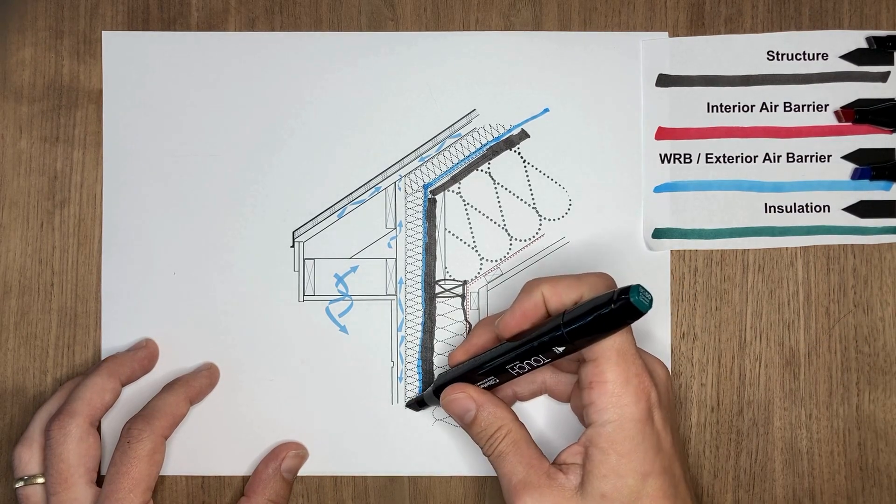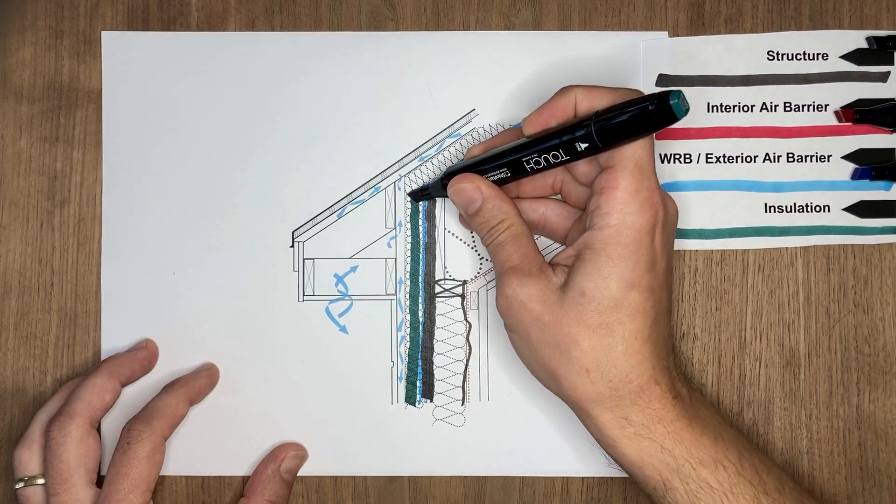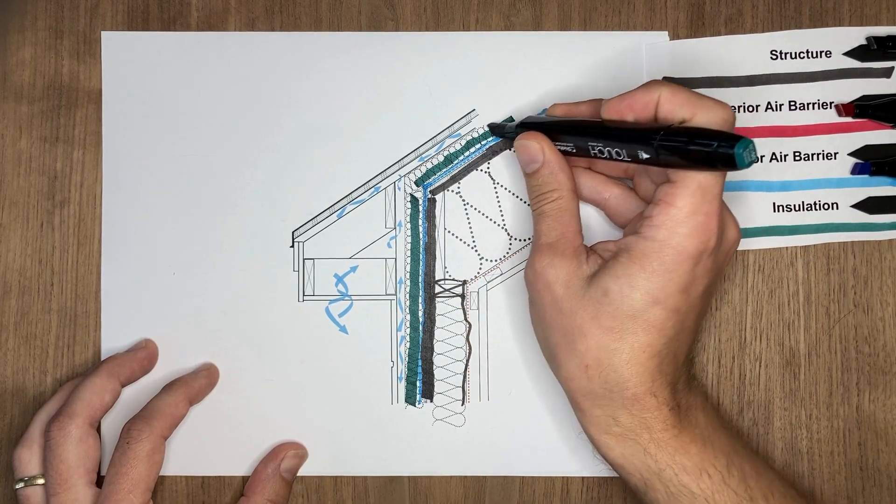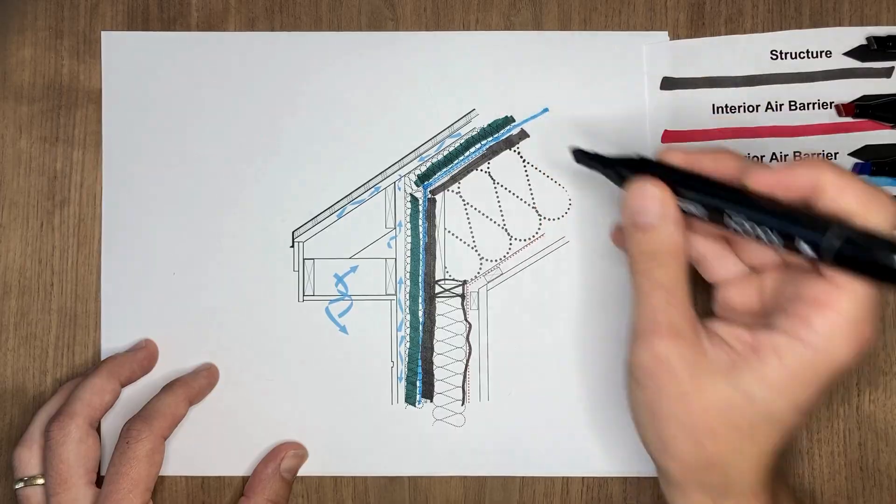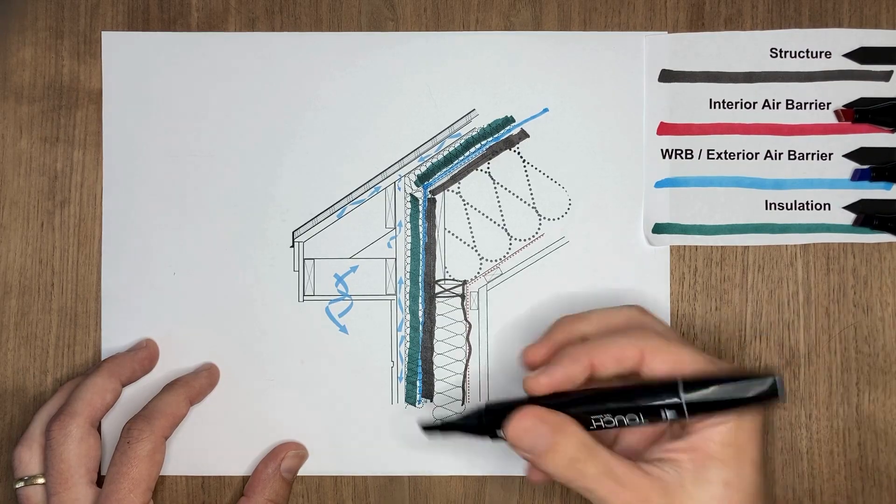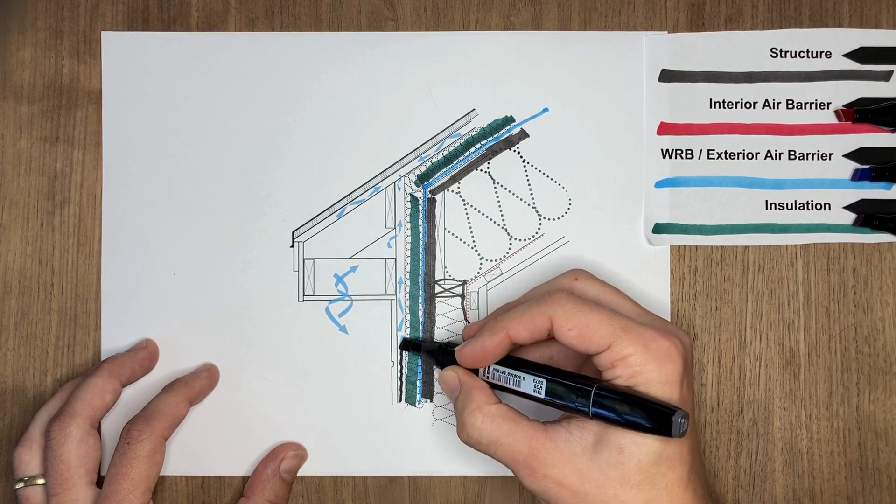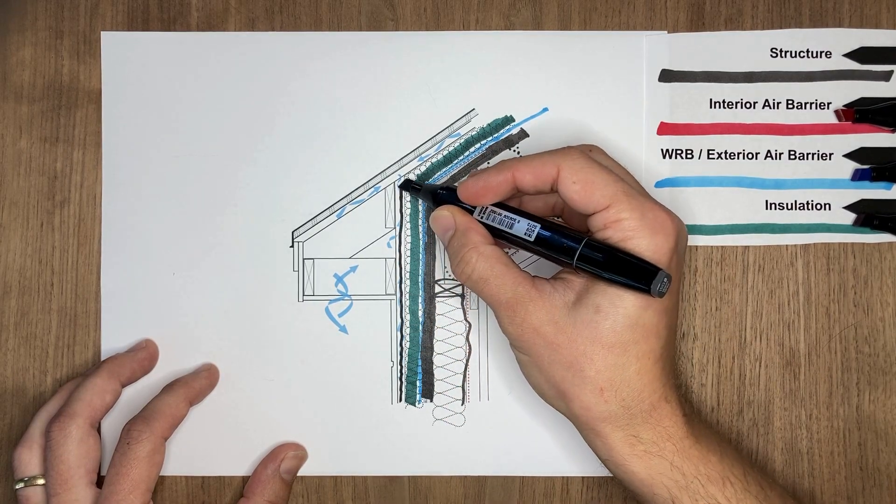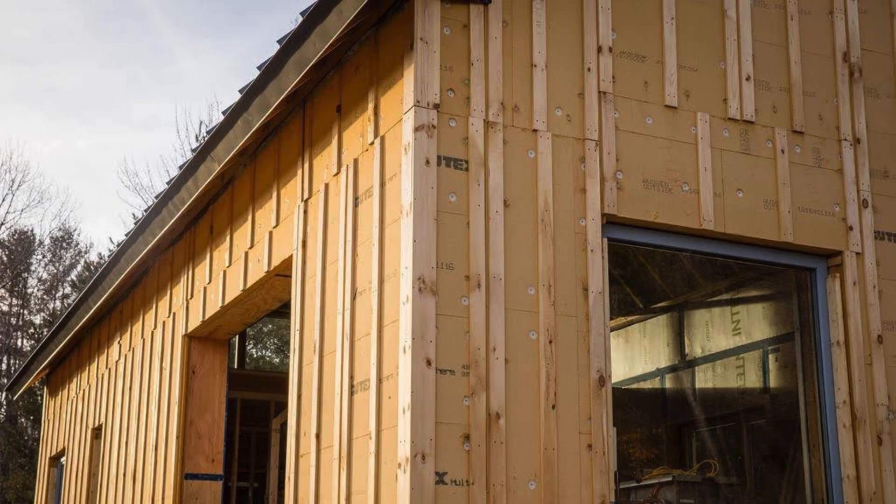We can then insulate on the exterior with some type of fibrous board insulation, something that is vapor permeable, a wood fiber board or a mineral board, and we're creating a drainage plane that is vented outboard of that. This is typically done with one-by wood furring strips running vertically.